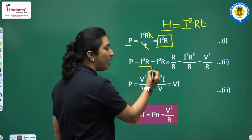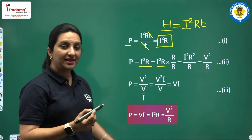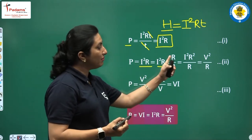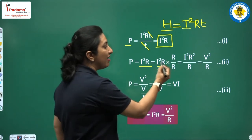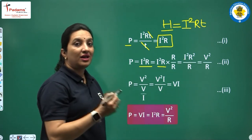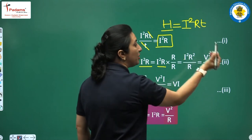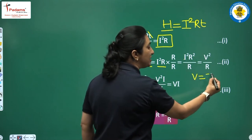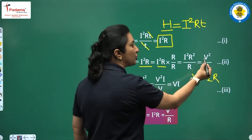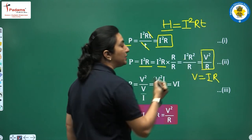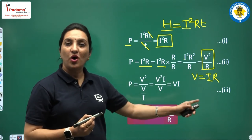Power is I²R. If we multiply by R and divide by R, we get I²R²/R. By Ohm's law, V = IR, so I²R² can be written as V². Therefore we have one more formula for the power of the circuit: V²/R.